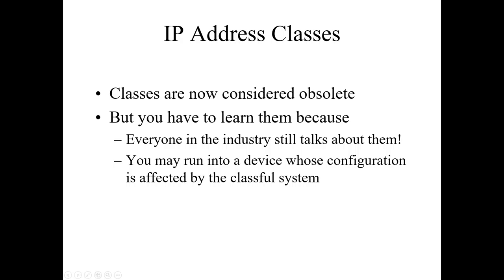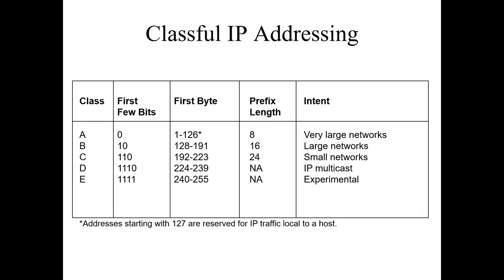Class A — if the first octet starts with any number between 1 and 127, it's class A, normally used for very large networks. Class B is between 128 and 191 in the first octet — for large networks. Class C is anywhere between 192 and 223 — more for smaller networks. These are predefined at /8, /16, or /24 respectively. With classful addressing, you couldn't modify them — you were stuck with those.